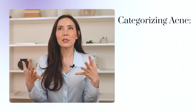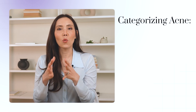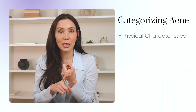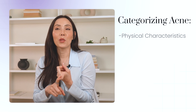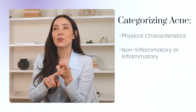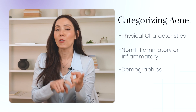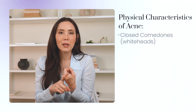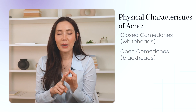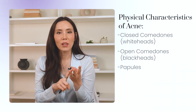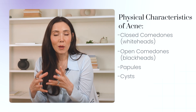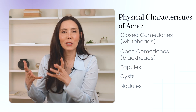There are also different types of acne depending on how deep and inflamed it is. There are three different ways to categorize acne: based on their physical characteristics and presentation, based on whether they're non-inflammatory or inflammatory, and based on the demographics and who they affect. When it comes to physical characteristics, we use certain descriptor terms: closed comedones or whiteheads, open comedones or blackheads, papules which are inflamed bumps, cysts which are larger bumps, and nodules which are similar to cysts.